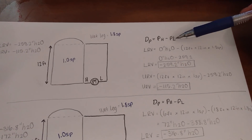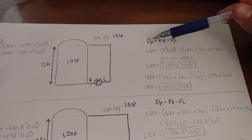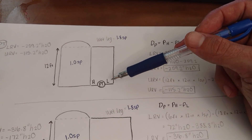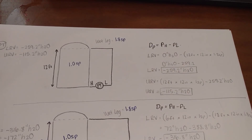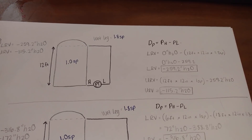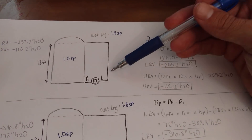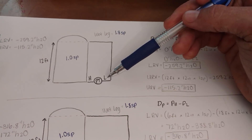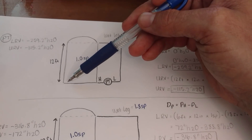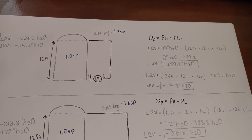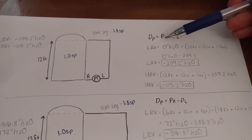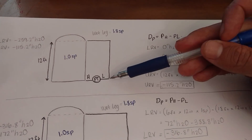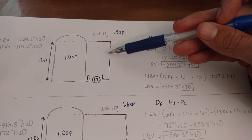We're going to use this formula: differential pressure equals pressure high minus pressure low. For the lower range value in this situation, we have 0 inches H₂O for our pressure high side — 0 inches because our pressure transmitter is actually even with the base of this tank, which would be at 0 feet of water. So we're going to have 0 inches H₂O for our pressure high, minus our pressure low side, which is going to be this hydrostatic pressure here.